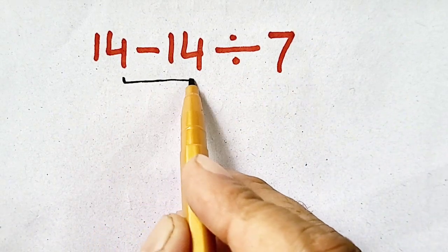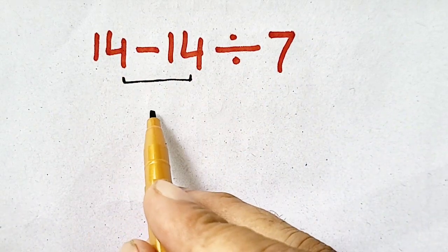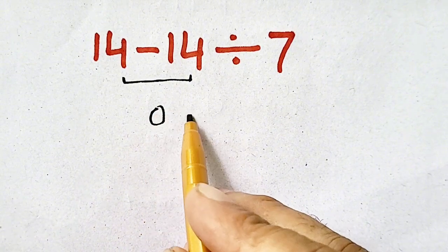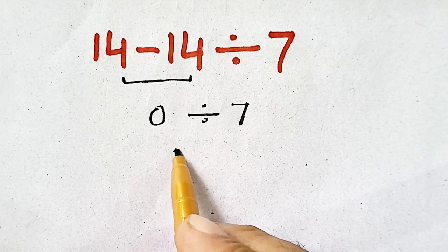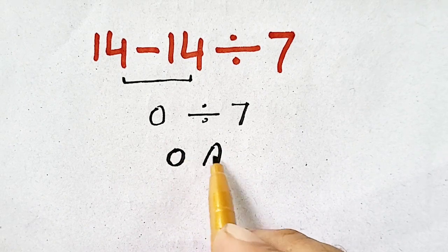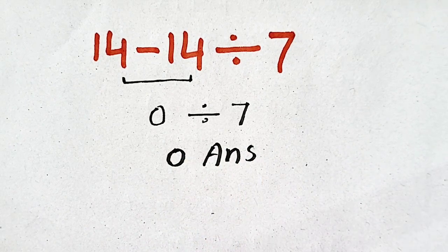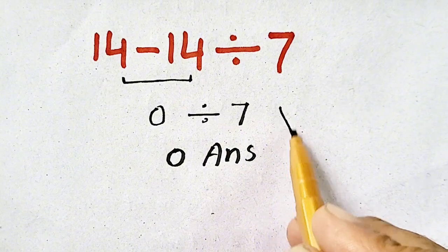Here you might note that 14 minus 14 will equal 0 divided by 7. So 0 divided by 7 equals 0, which would be our answer, but remember that it is wrong.